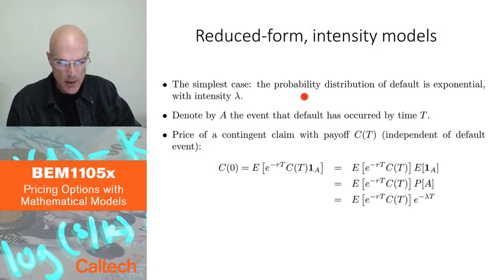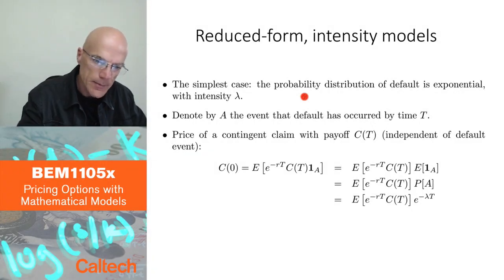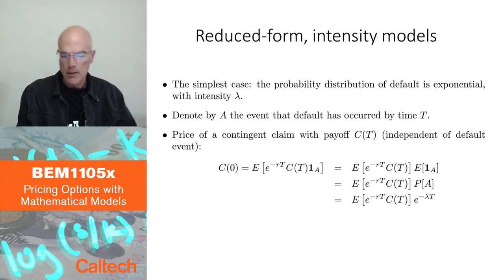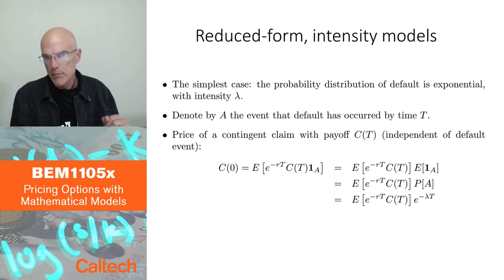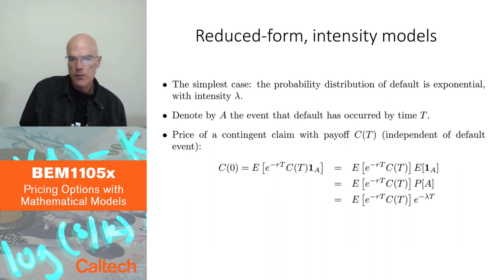And then there is the second family of models, which is more pragmatic, more practical, less intuitive, although it will be somewhat intuitive. But it's more straightforward to apply in practice. In particular, there is no problem of not observing the value of the firm. These are called reduced form or also intensity-based models.